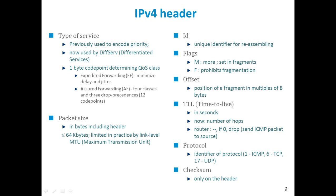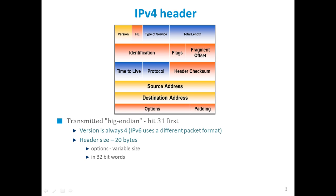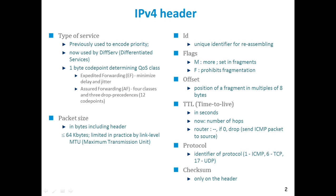The next field is type of service. It is used for the priority setting of your packets, used in purposes like DiffServ and IntServ — that is MPLS differentiated services. Each packet is given some priority based on the application. The quality of service is set based on different classes: expedited forwarding, which minimizes delay and jitter, and assured forwarding, which has four classes and three drop precedences — altogether 12 code points. This type of service field is used to set priorities within your packets.